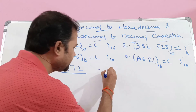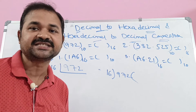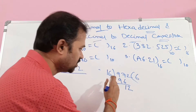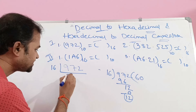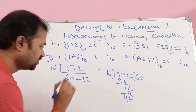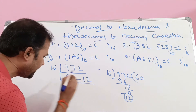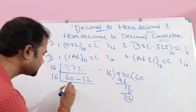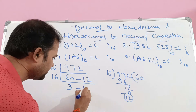Perform the division operation: 972 divided by 16. 16 times 6 is 96, so 97 minus 96 is 1, bring down 2, giving 12. So quotient is 60 and remainder is 12. We continue this process until we get quotient as 0. Again perform division by 16: 60 divided by 16 gives quotient 3 and remainder 12.